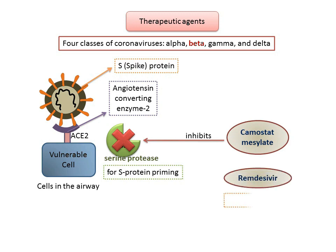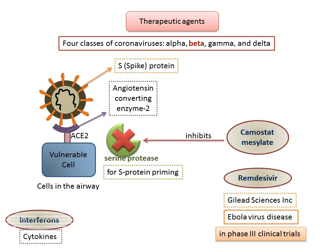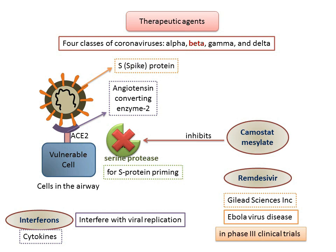Remdesivir, developed by Gilead Sciences Inc., was previously tested in humans with Ebola virus disease and has shown promise in animal models for MERS and SARS. The drug is currently being studied in phase 3 clinical trials in both China and the USA. Production of various cytokines in response to an invading pathogen contributes to the host's ability to eliminate the pathogen. During a viral infection, the most prominent cytokines produced are interferons, which interfere with viral replication. Because of this, interferons and interferon fusion proteins have been utilized as therapeutic agents for viral infections for the past 20 years.